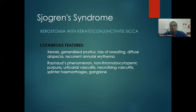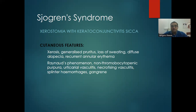Sjögren's syndrome presents with xerostomia with keratoconjunctivitis sicca. Cutaneous features include xerosis, generalized pruritus, nocturnal sweating, diffuse alopecia, recurrent annular erythema, Raynaud's phenomenon, non-thrombocytopenic purpura, articular vasculitis, necrotizing vasculitis, splinter hemorrhages, and gangrene.